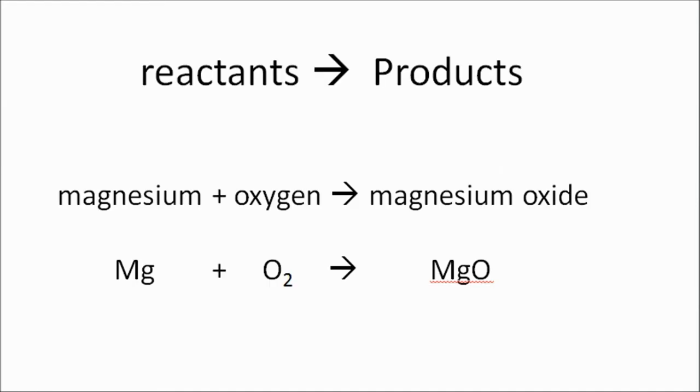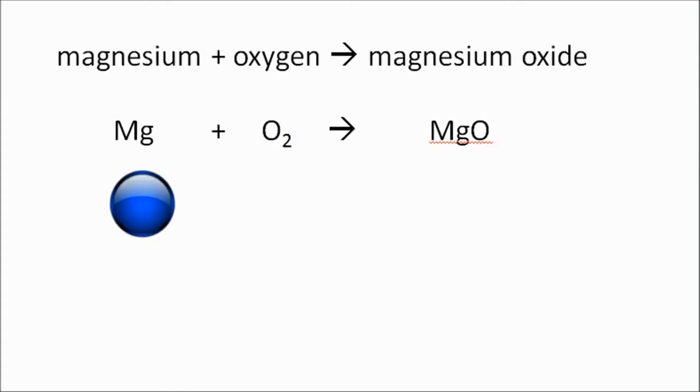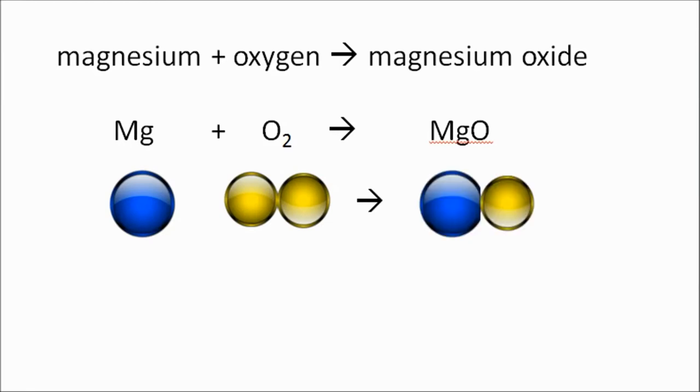So here it is, here's the reaction. Magnesium reacts with oxygen in the air to form magnesium oxide. We've got one atom of magnesium on the left, oxygen goes round as two atoms bonded together, so we say it's diatomic, and on the right, our product, we have magnesium oxide.